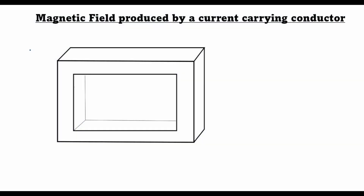Welcome to your first lecture on electrical machines. Today we will be looking at the mechanism of magnetic field production by a current carrying wire that is wrapped around a core. So imagine I have a core like this and I wrap N turns of a wire around it. These are N turns wrapped around a core and I excite this wire with a current I.